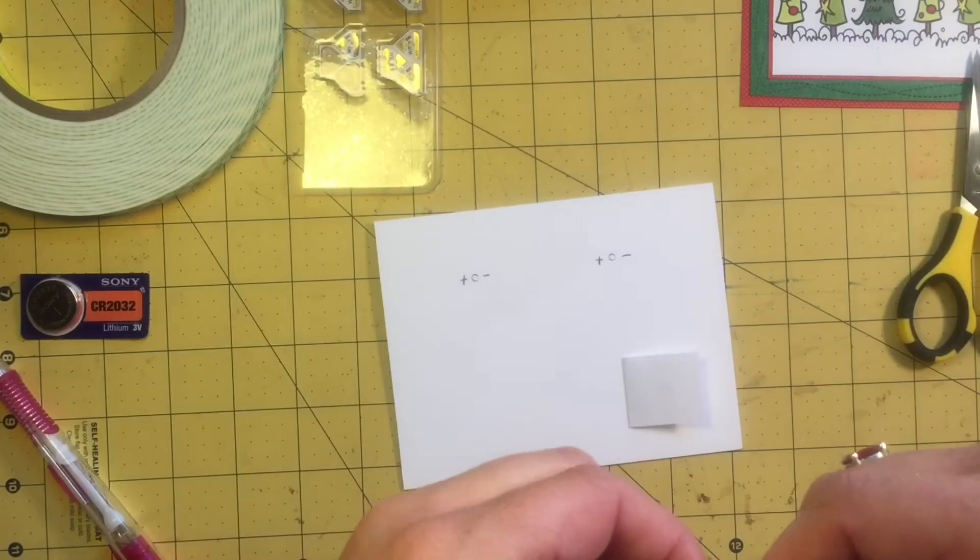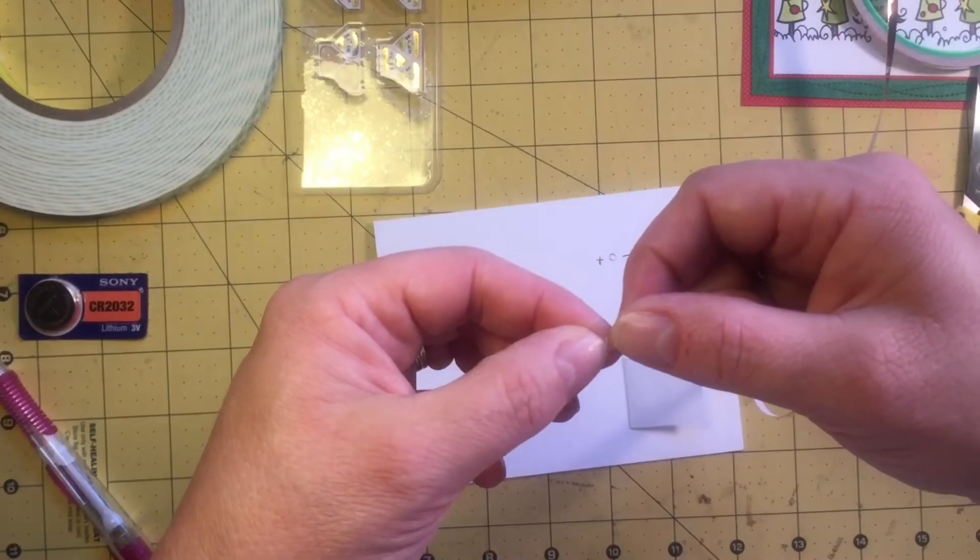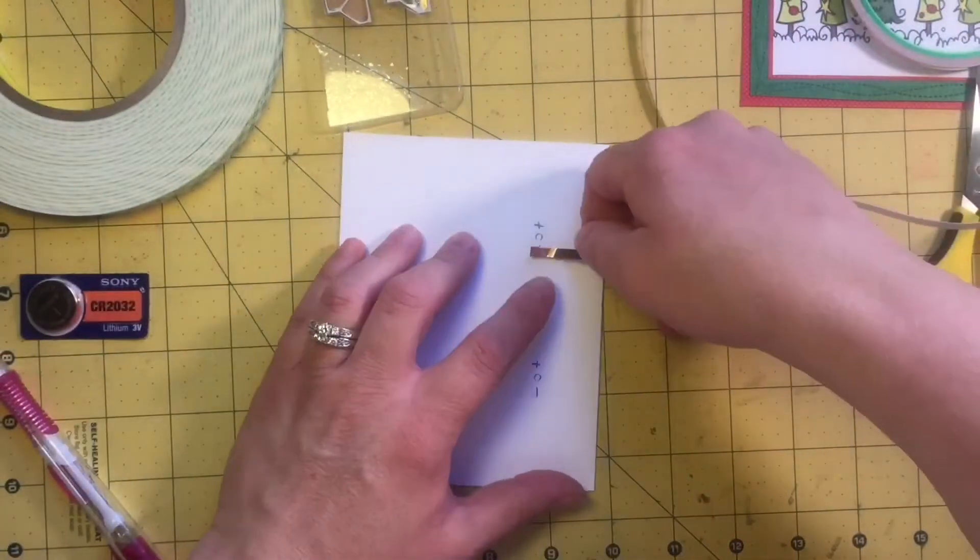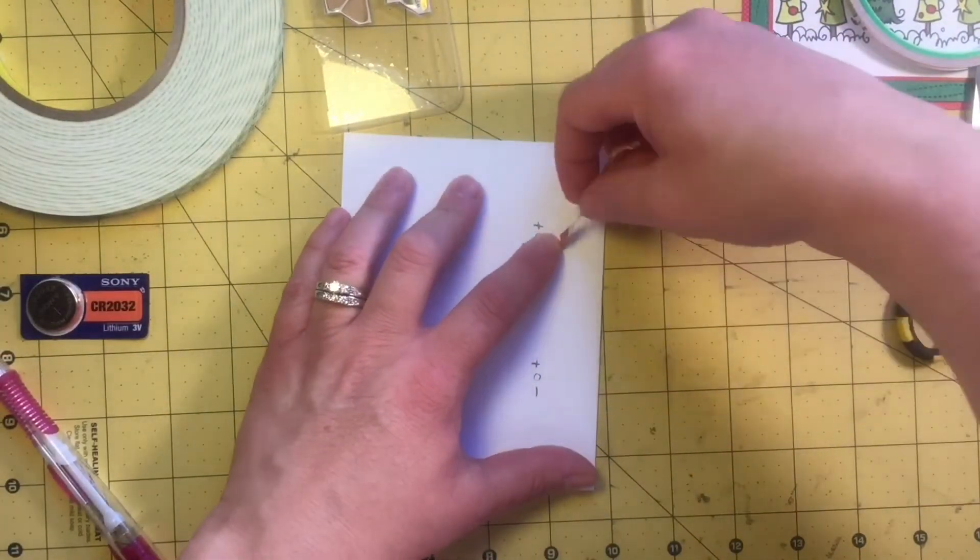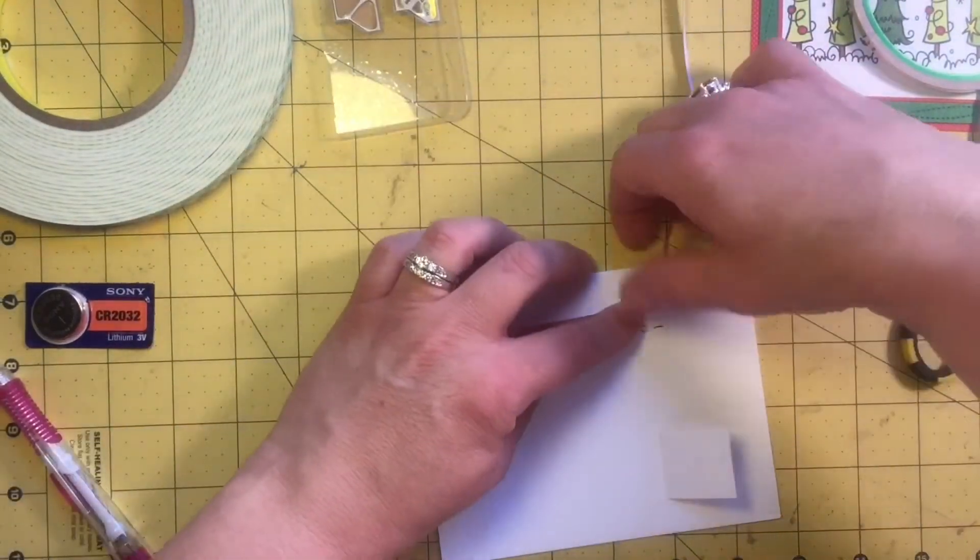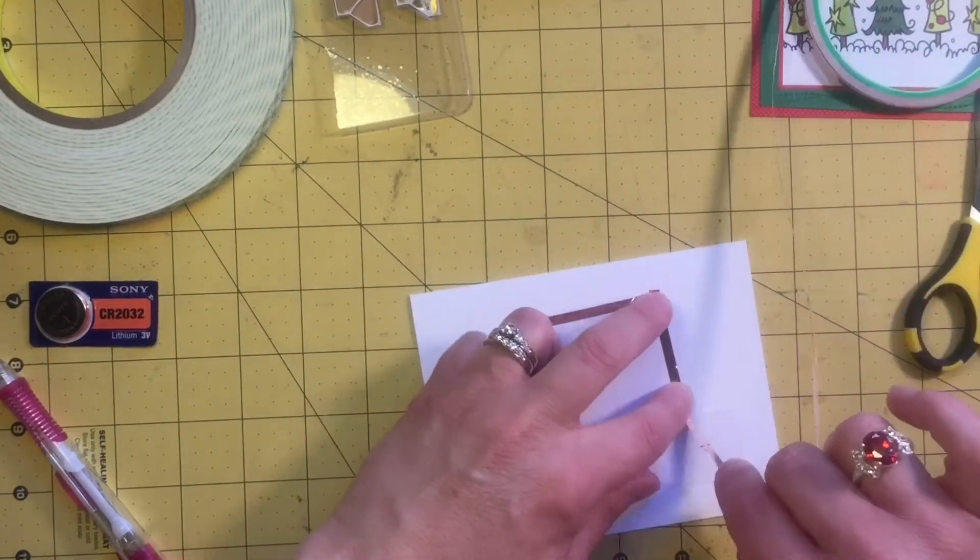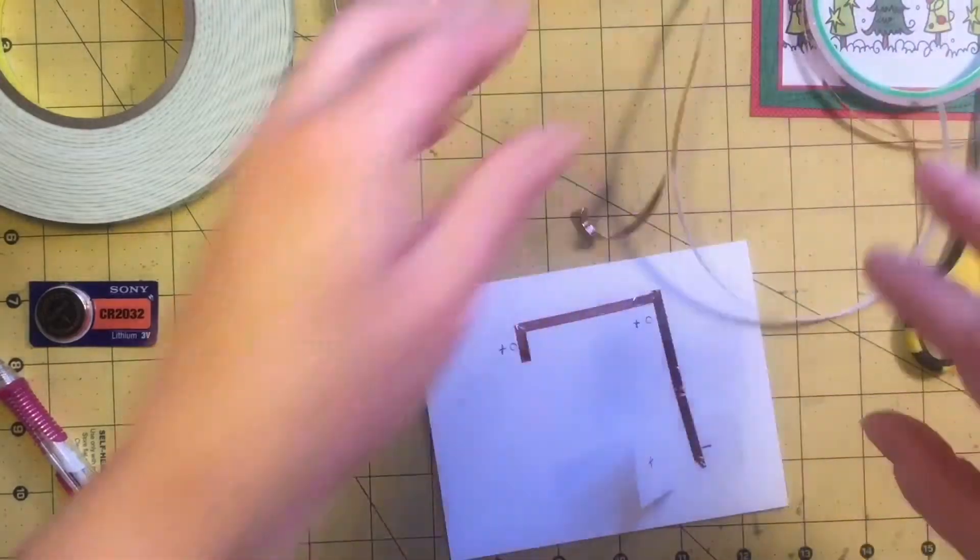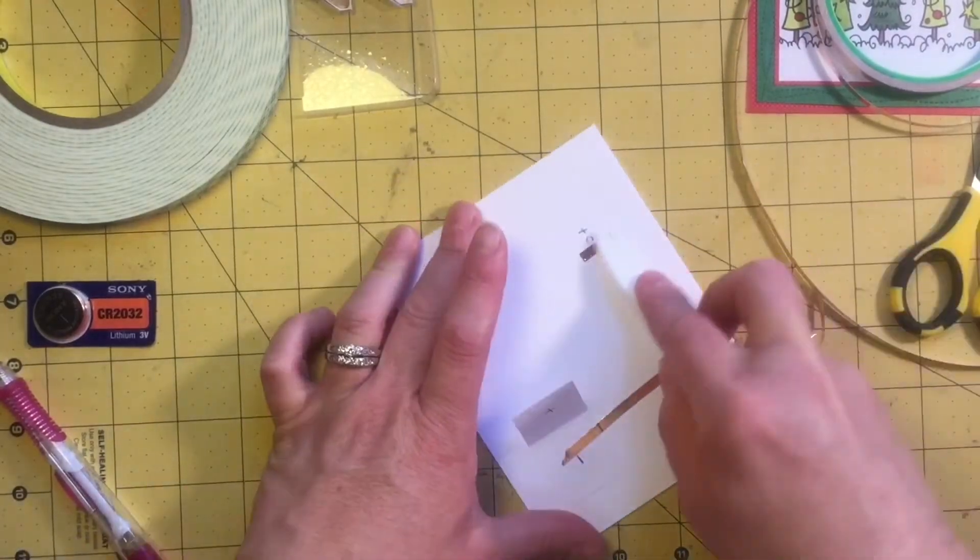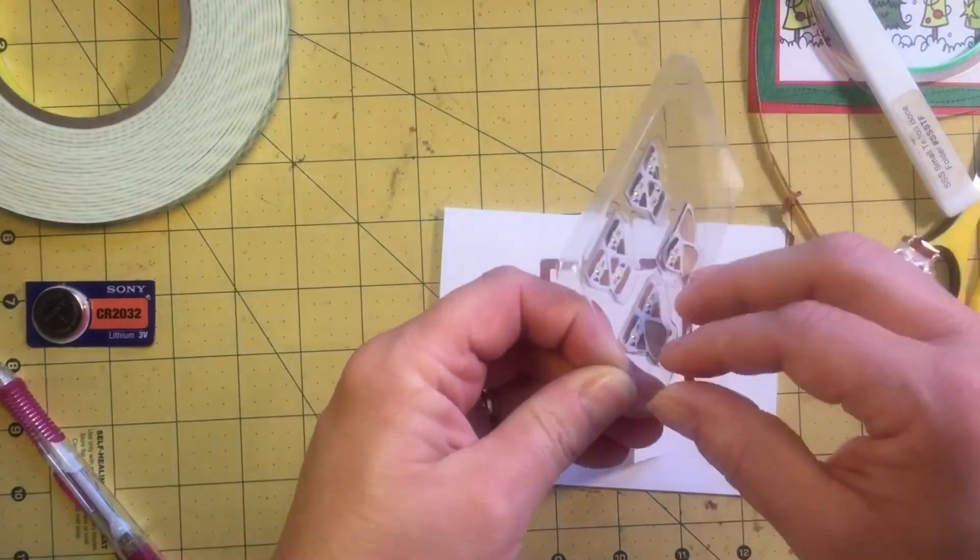I'm going to run my copper tape, starting with the negative path first. Some people cut their tape in half, but I don't mess with that because it's just an extra step I don't really care to do. So to make corners, you just fold it back on itself and then come down. Use a bone folder or the side of a pen to burnish it down to make sure you've got good contact.